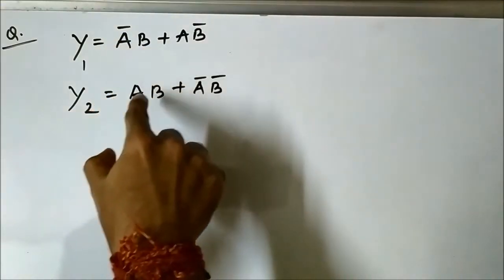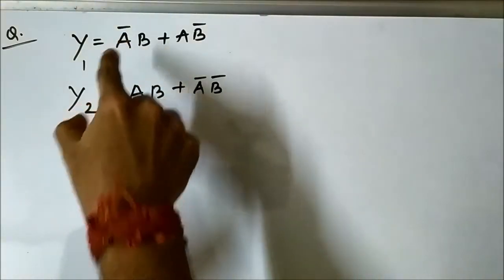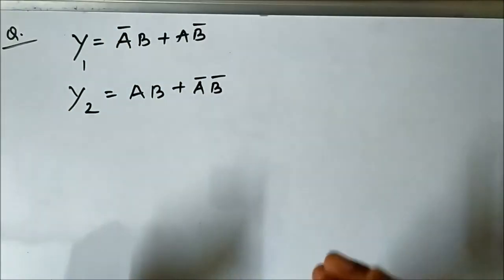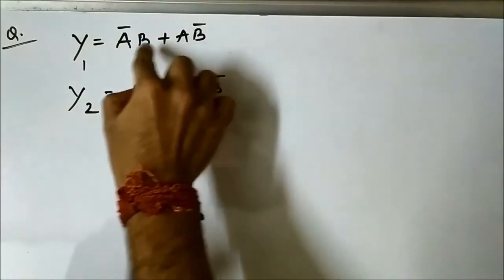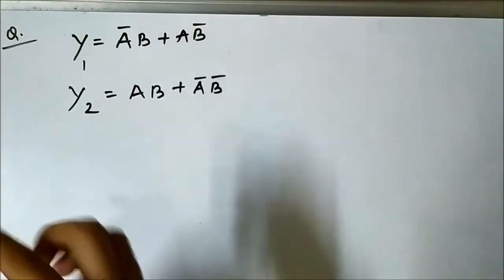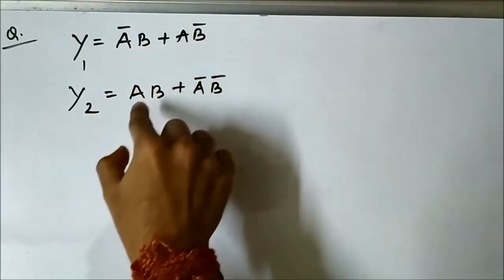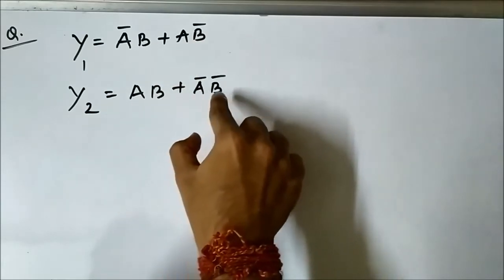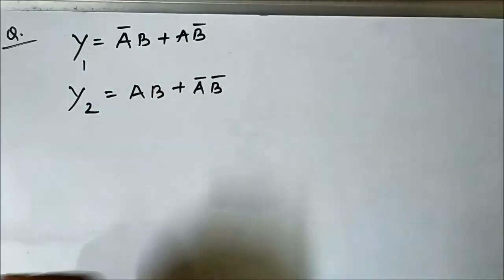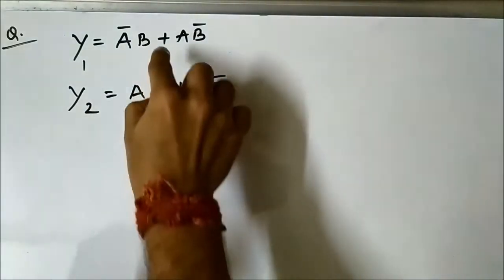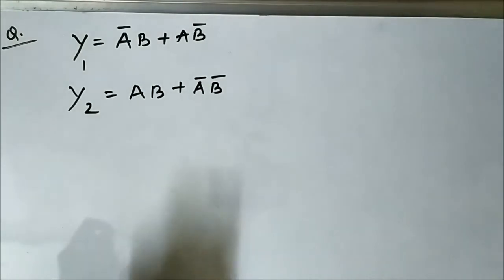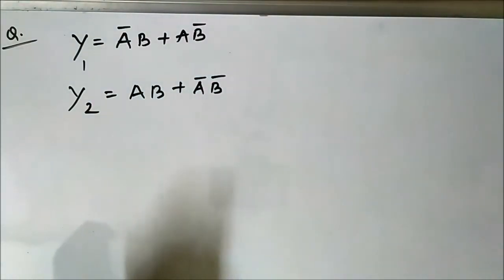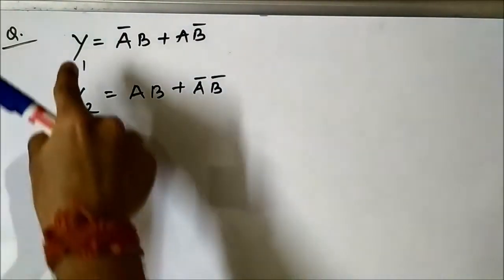The NOT operation or inversion operation clearly indicates we will require a NOT gate. The AND operation — seen in ā·b, a·b̄, a·b, and ā·b̄ — indicates we will require an AND gate. The plus sign represents the OR operation, so we will require an OR gate as well.